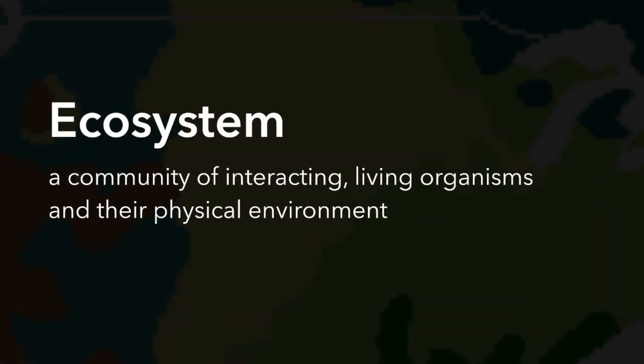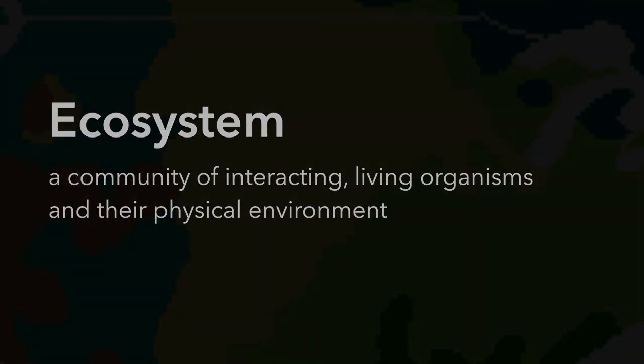An ecosystem is a little bit different from a habitat because the ecosystem looks at a community of interacting living organisms and their physical environment. So we're looking at the plants and the animals, but we're also looking at the physical environment around them, such as sun, lakes, rivers, oceans, rocks, and anything else within their environment, even if it's not alive.